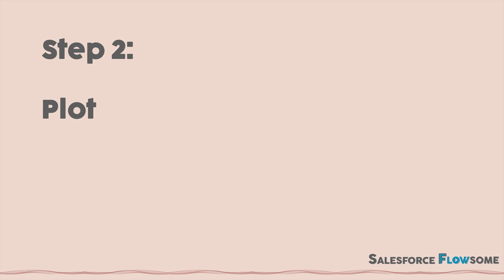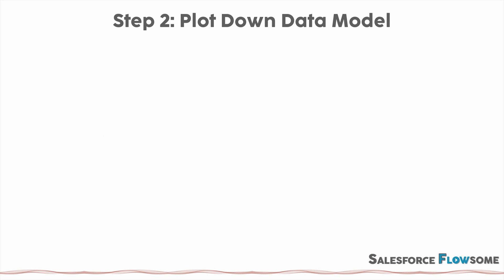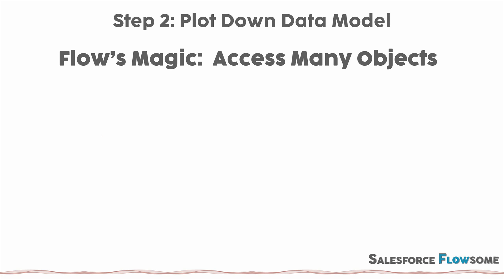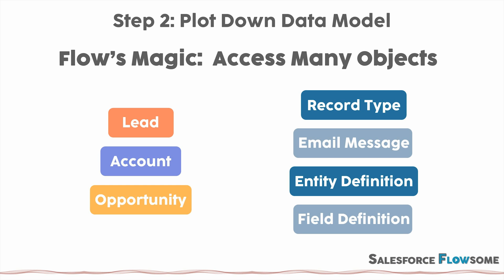Step two: plot down the data model. When it comes to flow, if we exclude custom actions or components, the elements we can use are actually quite limited. But flow is still highly flexible because we can manipulate many different objects freely. There are standard objects like account or opportunity that are easy to understand, but there are also many advanced objects like record type, email message, entity or field definition, and so on. To become fluent in flow, having an overview of the data model involved is as important as knowing the basics of flow concepts.